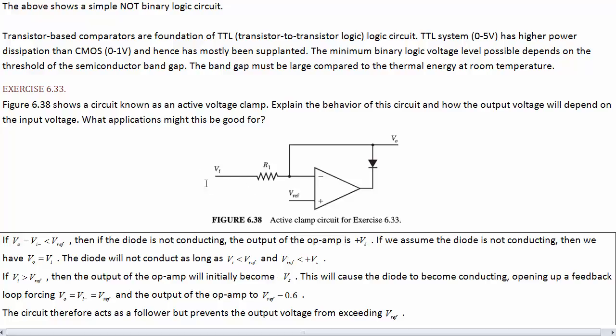So, what this does is it's a follower circuit, except that it also stops the input from being higher than V ref. So, that's why this is called a clamp. It clamps the voltage to not get any higher than this reference voltage. If the voltage wants to be lower than the reference voltage, go ahead.